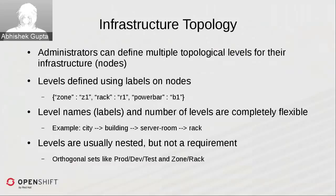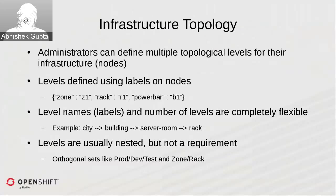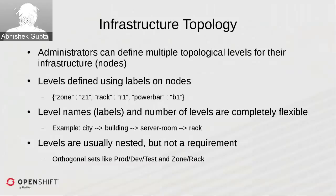Talking about infrastructure topology in detail: administrators can define multiple levels — which could be anything, like zones, racks, or power bars. The way administrators define this is by using labels on the nodes. For example, labels such as zone=Z1, rack=R1, power_bar=B1 are picked up and considered by the scheduler in terms of infrastructure topology levels.